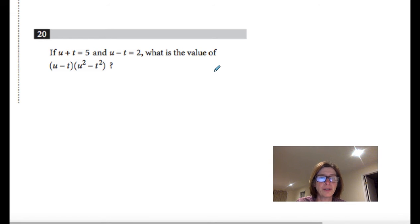And in this question it says, if u plus t equals 5 and u minus t equals 2, what is the value of u minus t times u squared minus t squared?